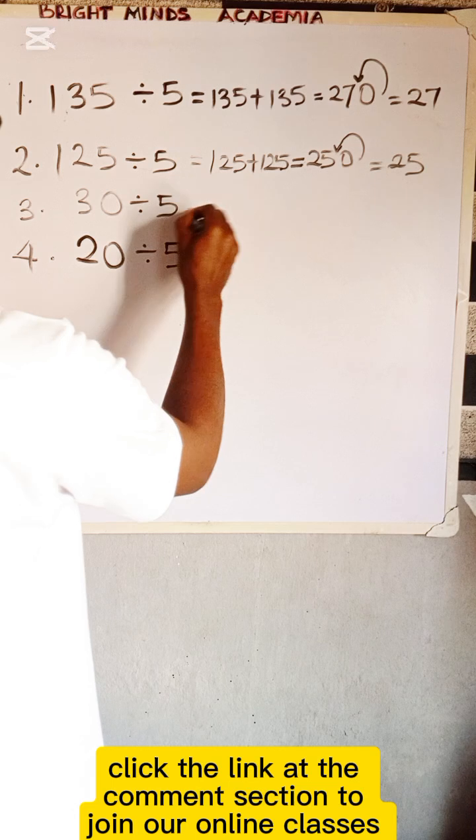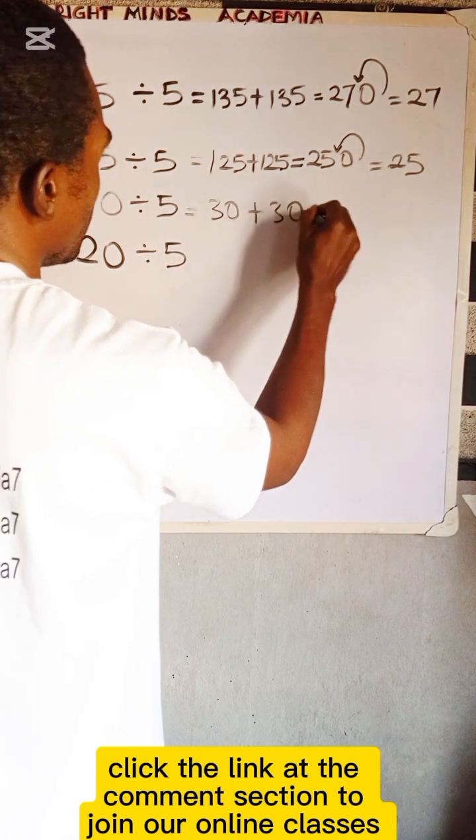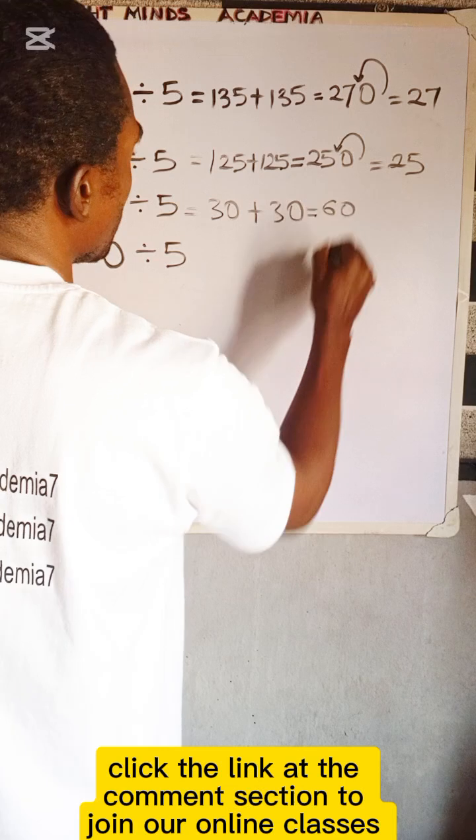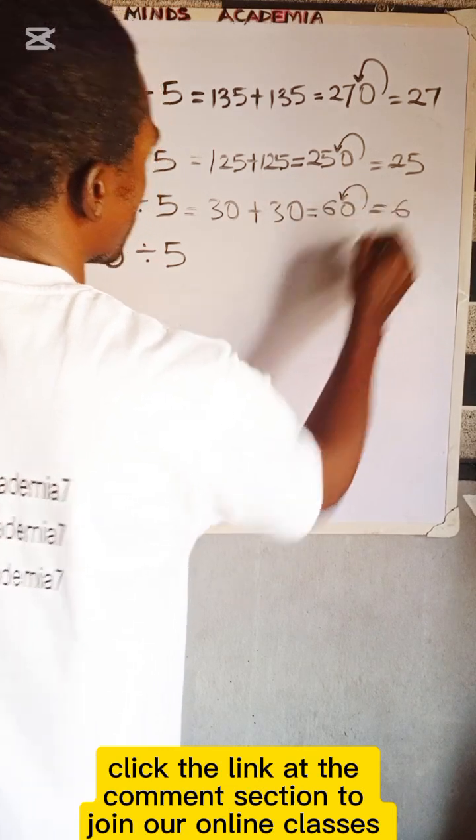30 divided by 5 is 30 plus 30, which gives you 60. Move the decimal point to the left once, and you have 6.